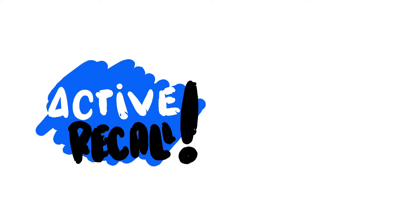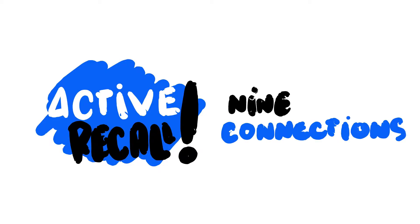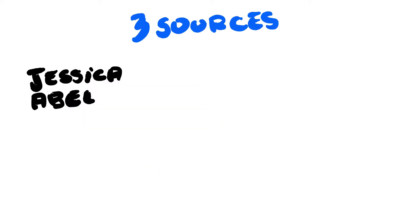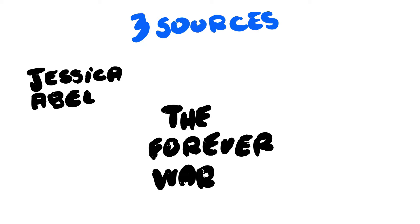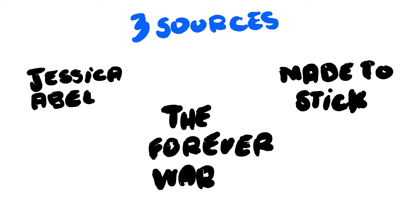This is Active Recall. This is another Nine Connections video. The three sources I'm going to talk about are Jessica Abel, she appeared on the Copyblogger podcast, and then the Forever War, which is a novel I started reading, and Made to Stick, which is a book I've read, but I'm rereading it, or actually re-listening to the audiobook.